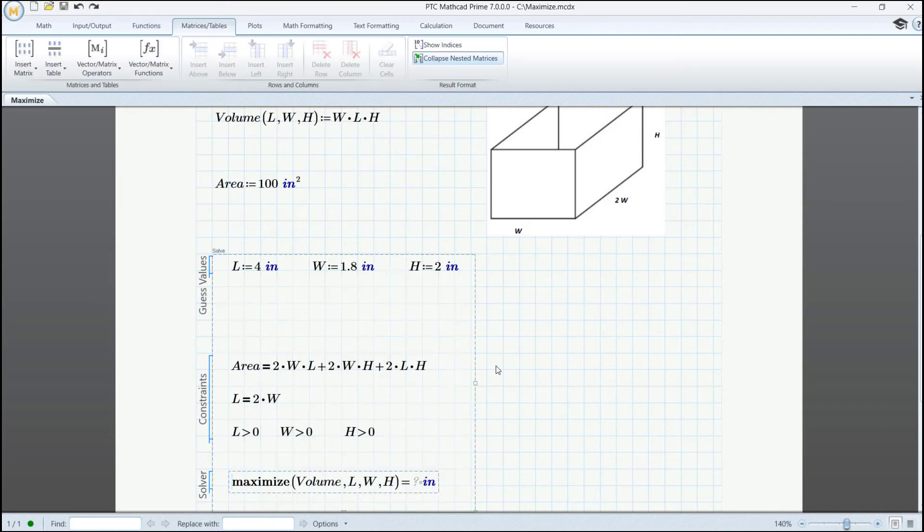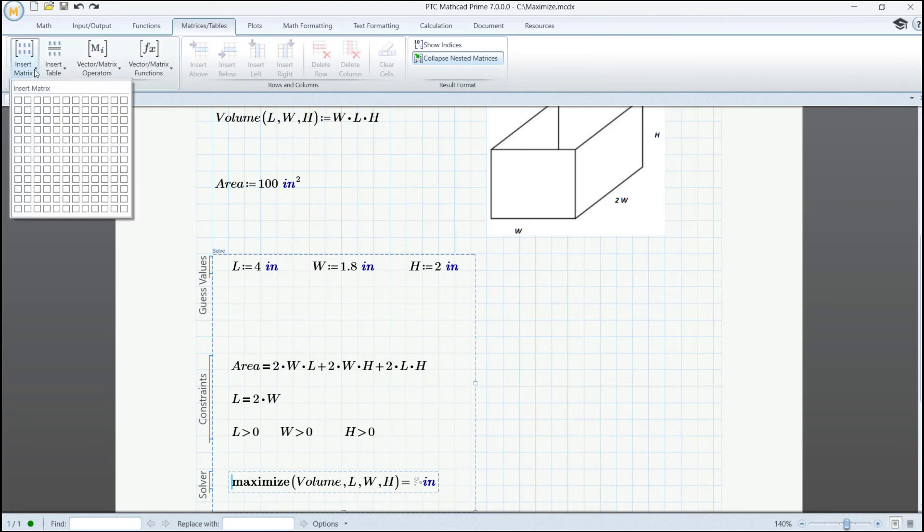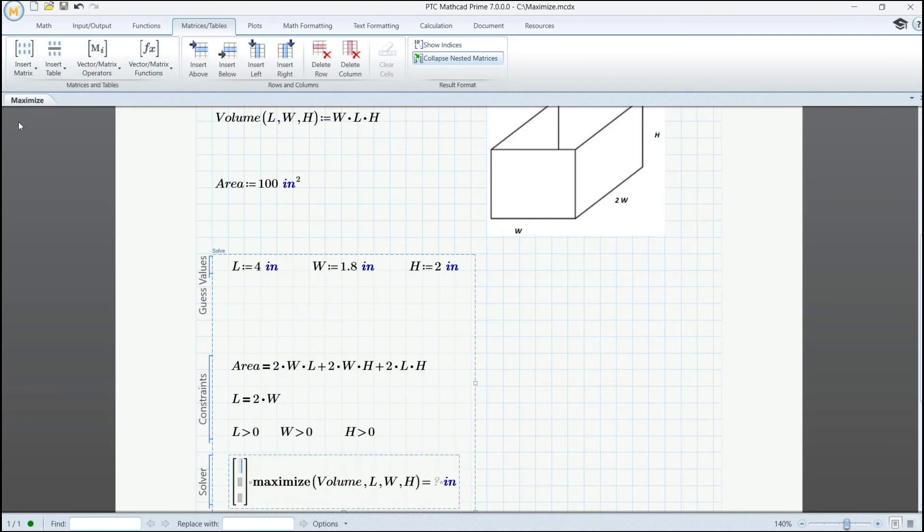Now we put our cursor to the left and insert a 3 by 1 vector and assign the solution to a vector of length, width, and height.